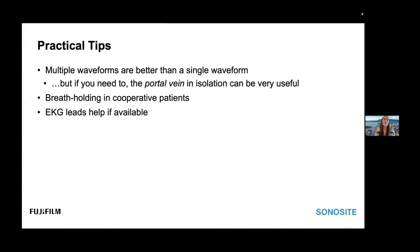A few practical tips. Breath holding in cooperative patients is really helpful, especially for your renals. ECG leads are helpful if available. If you can only get one waveform, the portal vein can be useful. I use this in patients in whom their hepatic vein is too hard to interpret or their kidneys are not obtainable. The portal vein is typically the easiest to obtain and most reliable to interpret, and changes more readily than the hepatic vein. You'll have patients in whom their hepatic vein will always be abnormal — especially if they have moderate to severe tricuspid regurgitation — just because the hepatic vein is so close to that right atrium. Their waveform may never normalize, whereas the portal vein, with a bit more distance, will better show changes with diuresis or fluid loading. So the portal vein can in and of itself be quite useful.